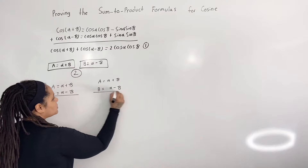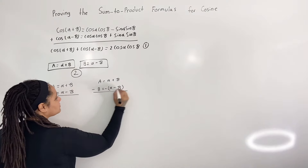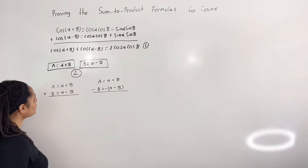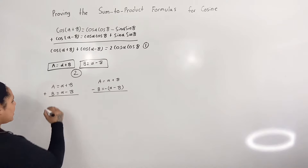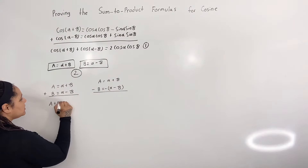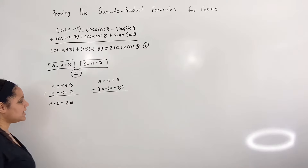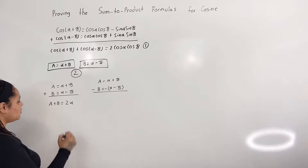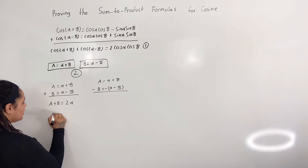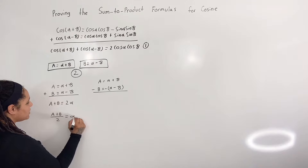Adding, we have a plus b is equal to 2 alpha, and if I solve for alpha, we have a plus b over 2 is equal to alpha.